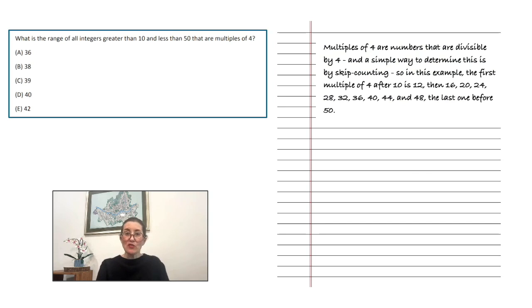In our second question, we are asked to find the range of all integers greater than 10 and less than 50, but that are multiples of 4. Finding a range of integers is fairly straightforward. We take the low number, the subtrahend, and subtract it from the high number, the minuend. In this case, we are asked exclusively for the range of numbers that are multiples of 4 that fall between the numbers 10 and 50. Multiples of 4 are numbers that are divisible by 4, and a simple way to determine this is by skip counting.